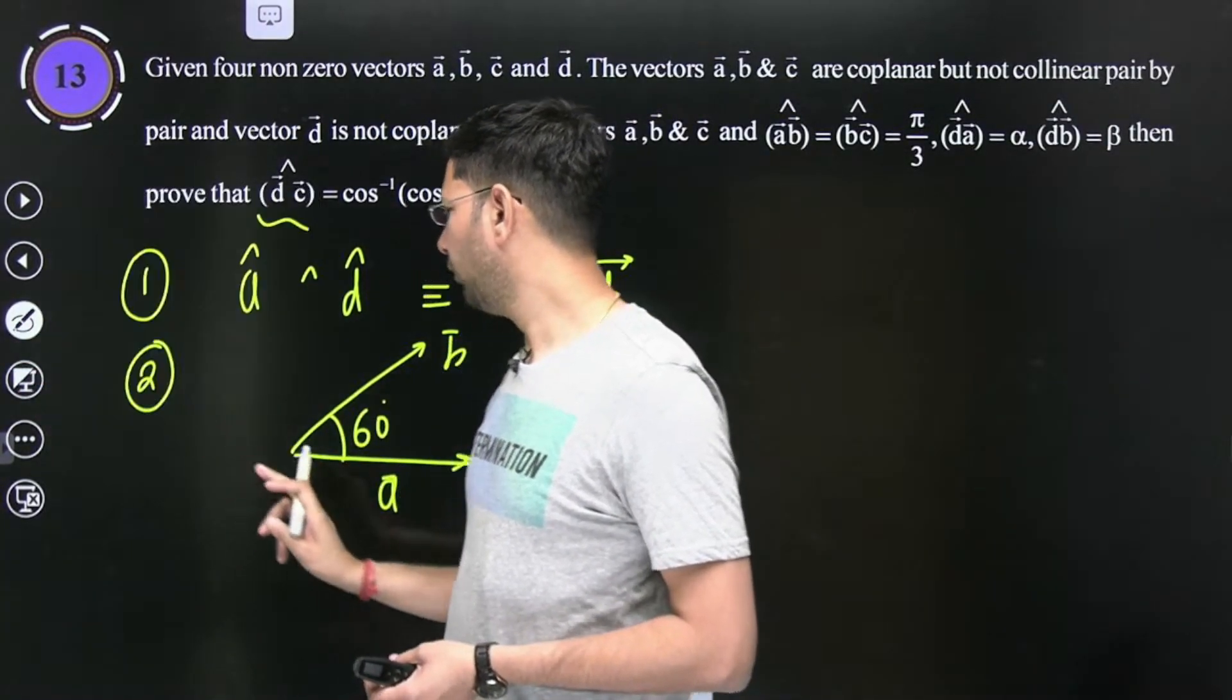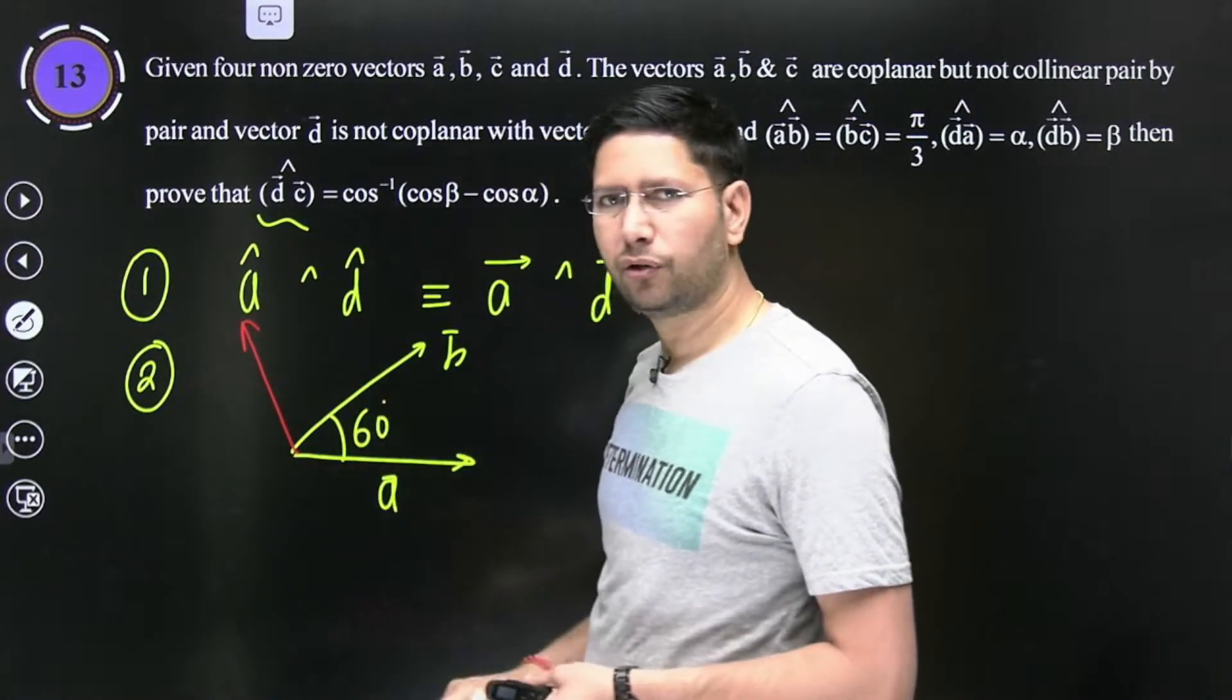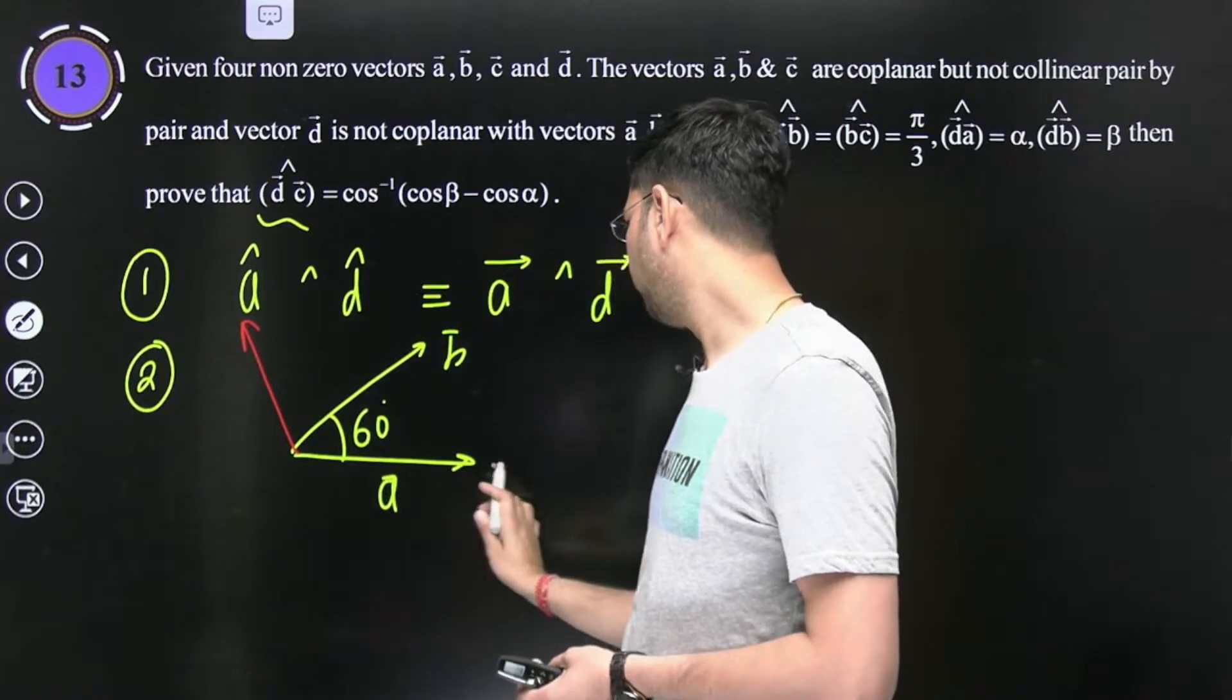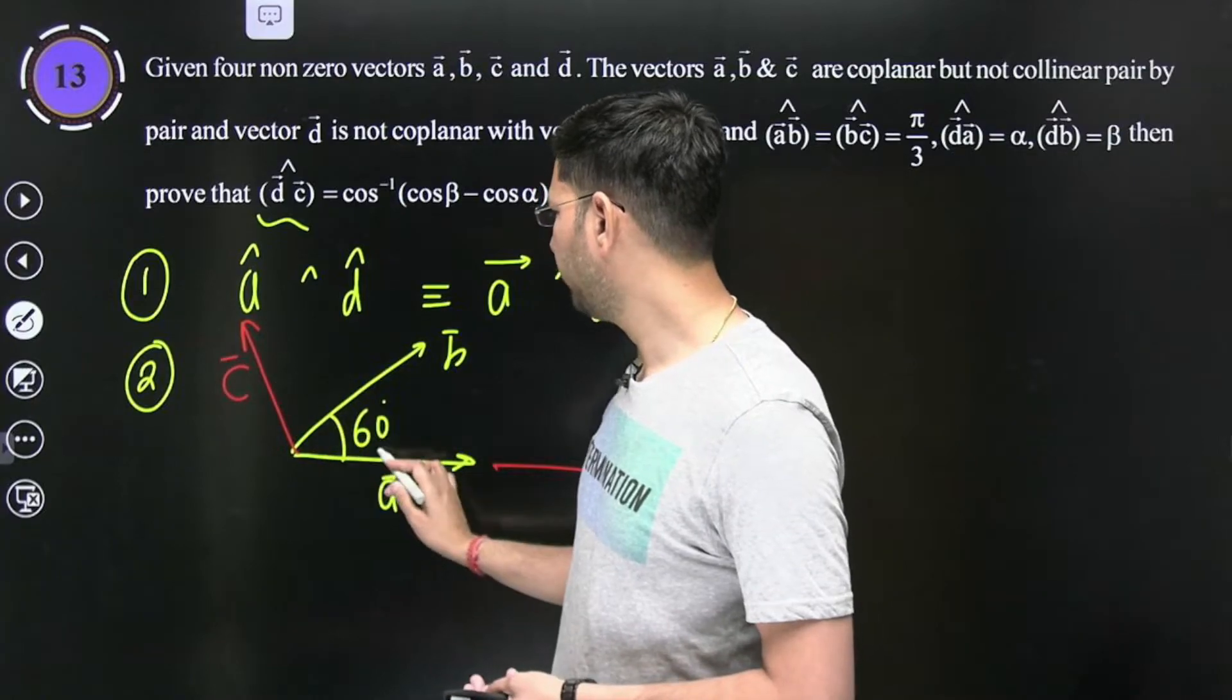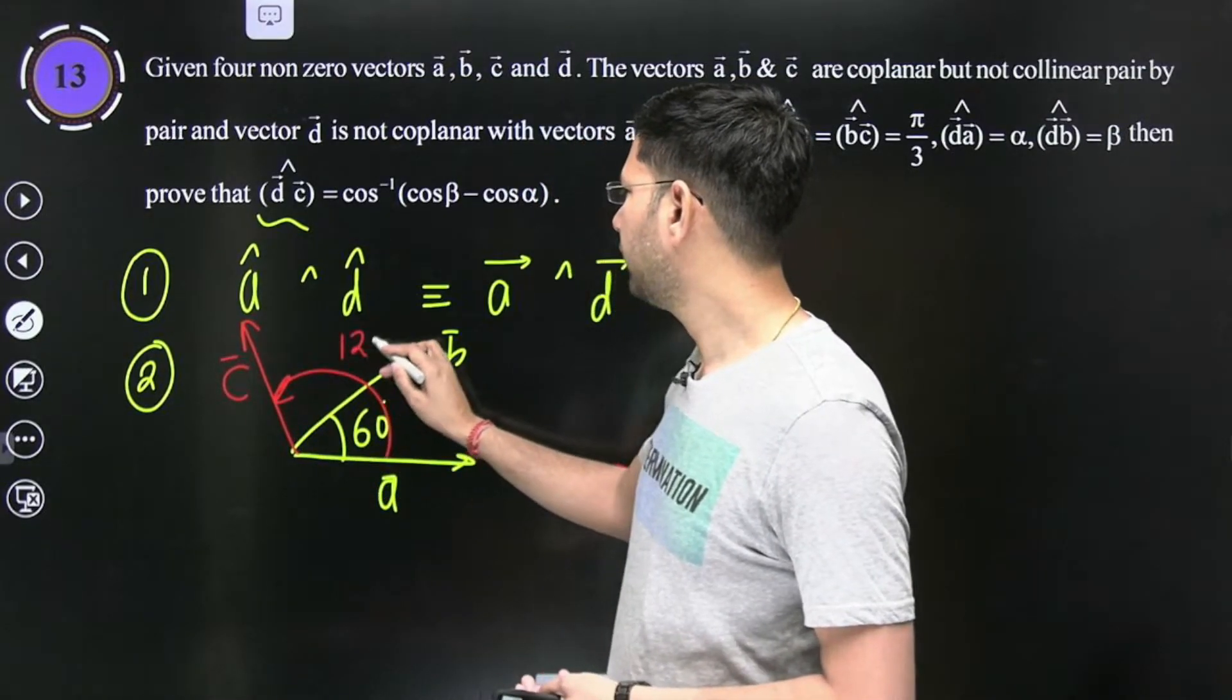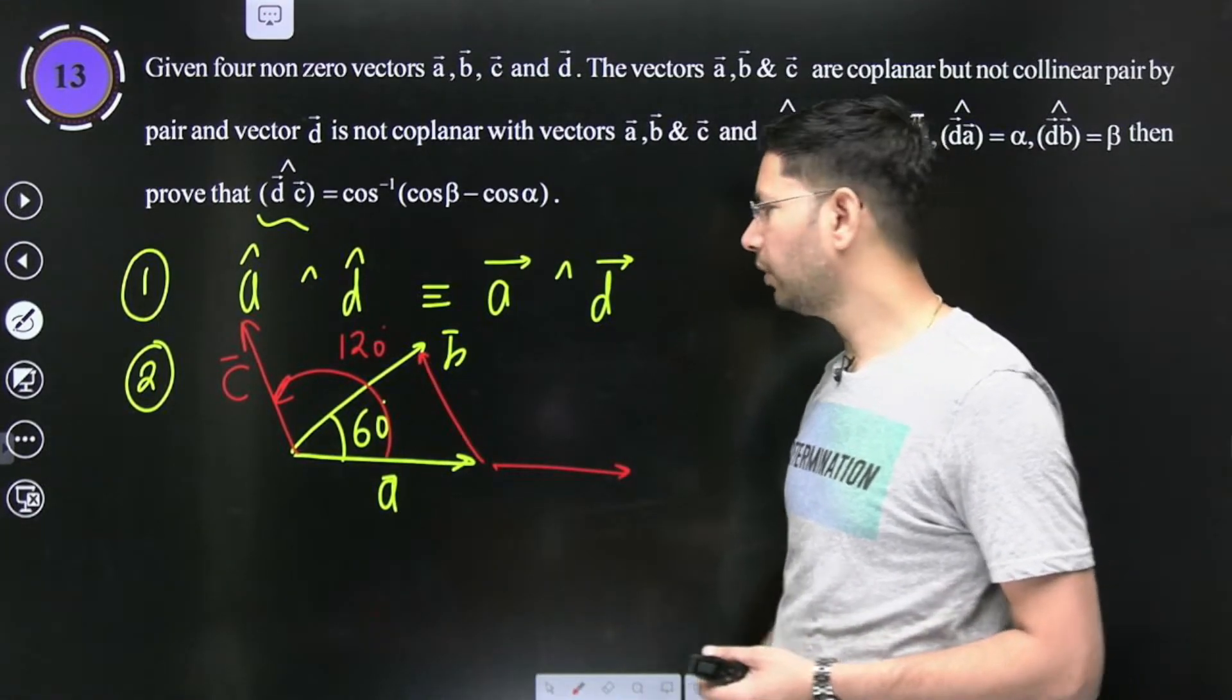C b isi plane mein, c ka b ke saath angle 60 hai. To bachon isi plane mein agar aapko jana hai aur angle b ke saath 60 banana hai, to lazmi si baat hai idhar hoga. Kya b ke saath 60 is taraf ho sakta hai? C vector nahi ho sakta, kya phir a or c collinear ho jayenge. To phir aapka ye hoga c vector, aur phir ye wala angle aapko dikhara hoga, kitna aayega, one twenty aayega. In fact, aapko dikhara hoga ki c vector aapka is tarah se hoga, triangle equilateral ban raha hoga.